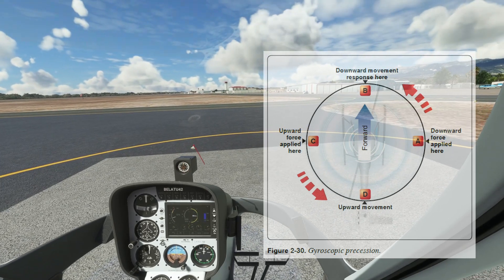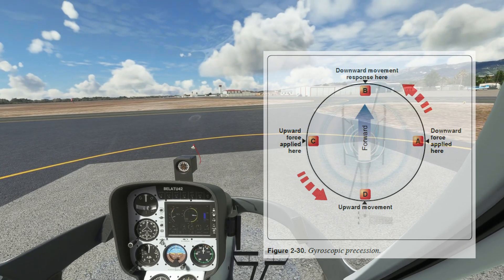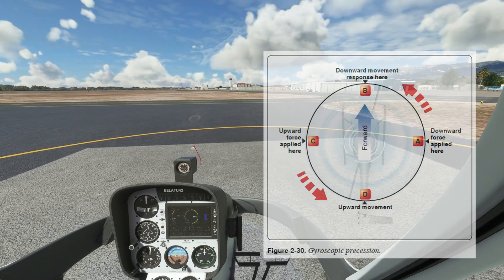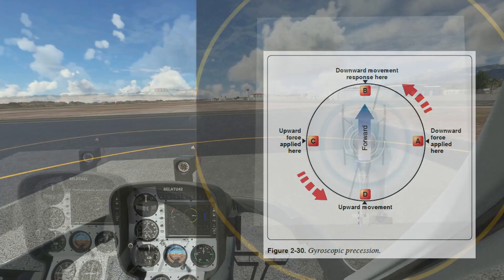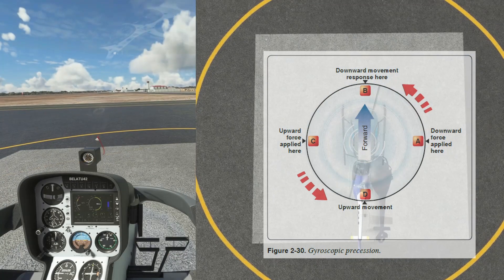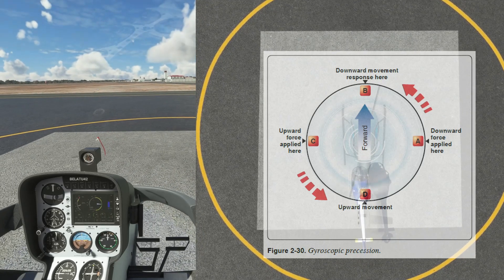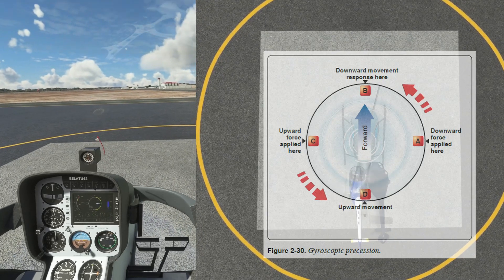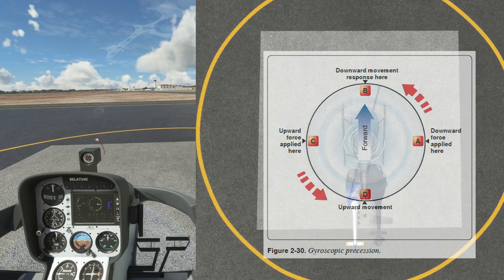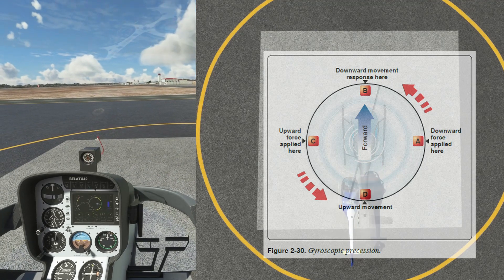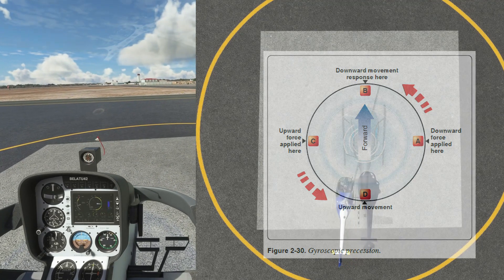The controls in the helicopter are rigged in a way that you don't have to account for this when you're moving the controls. But it will help your understanding of why certain things occur when they do when going through aerodynamic transitions — because the effect is happening 90 degrees after it was applied.